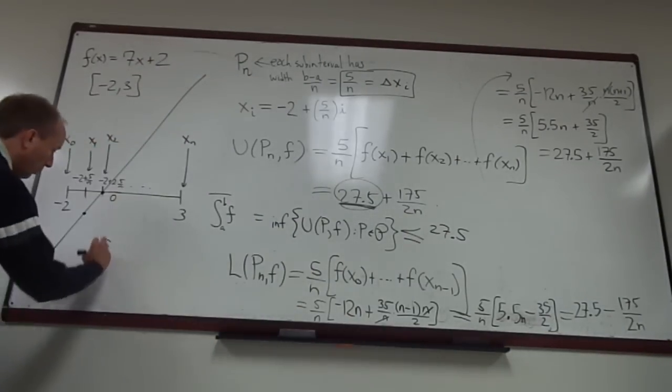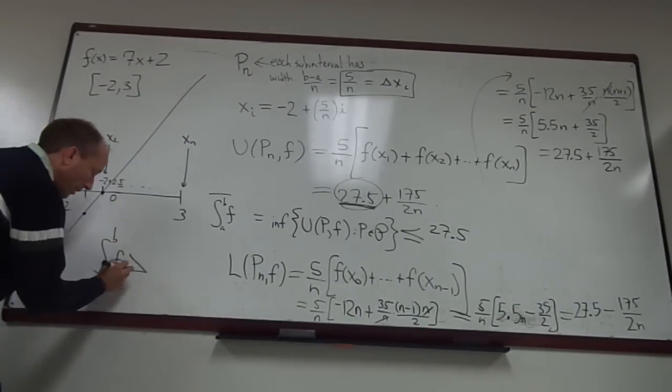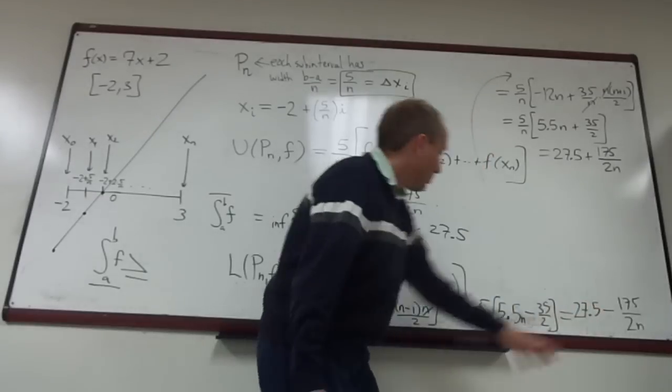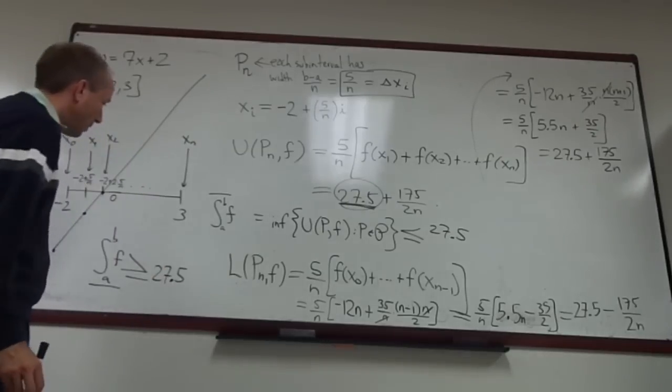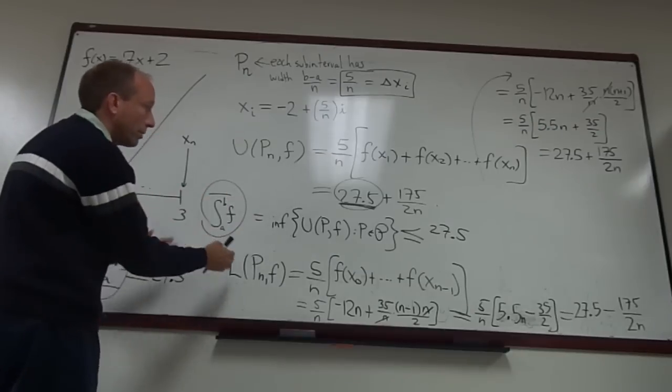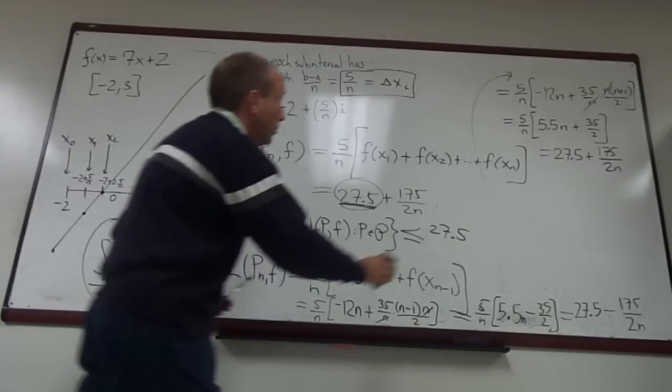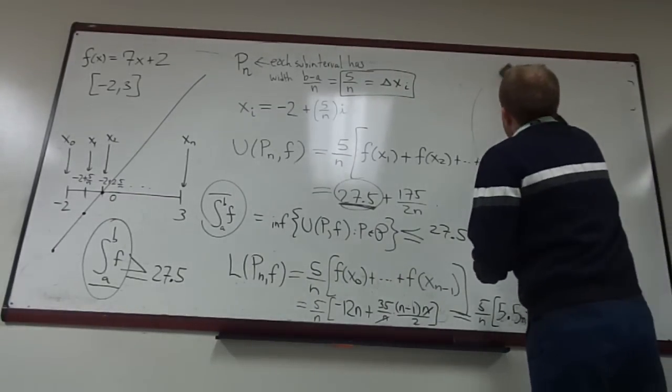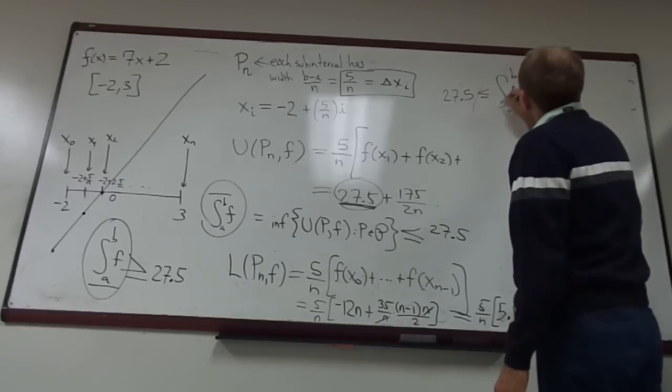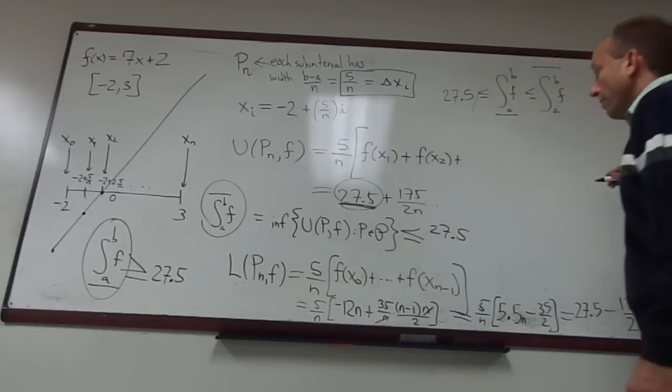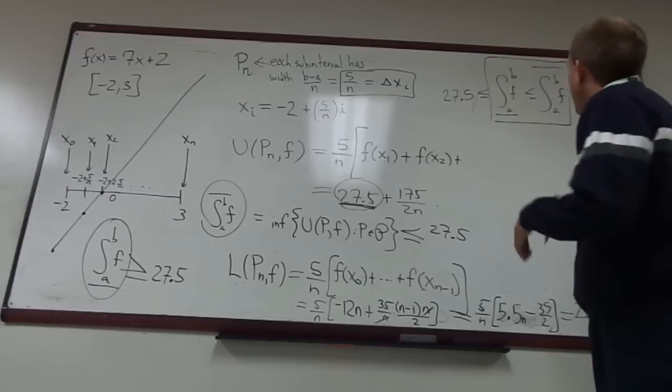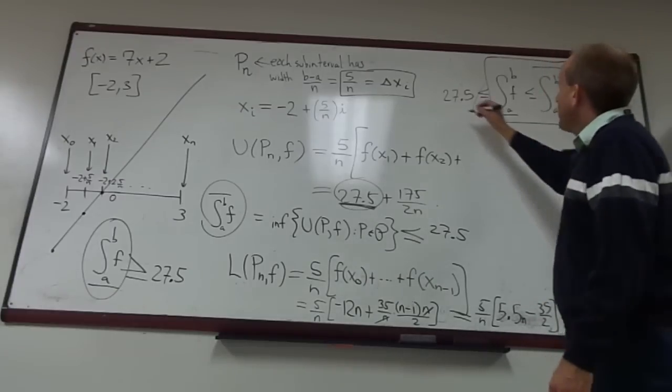And so therefore, the lower Riemann integral, remember, it's the greatest lower bound of all of these estimates. So it must be at least as big as all of these numbers. So it has to be at least 27.5. On the other hand, this number has to be less than or equal to, remember we had a theorem, the lower Riemann integral is always less than or equal to the upper Riemann integral. So actually, what you can then do is make a nice little chain, a nice little chain of statements, which says 27.5 has to be less than or equal to the lower Riemann integral of f, which is less than or equal to the upper Riemann integral of f, which is less than or equal to 27.5. So therefore, these guys must be equal. And that means that my function is Riemann integrable, and the value is 27.5.